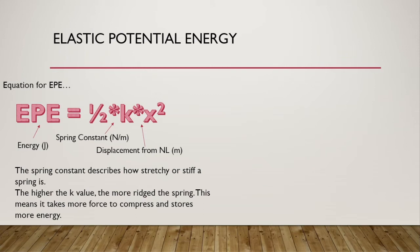The spring constant describes how stretchy or stiff a spring is. The higher the K value, the more rigid or stiff the spring is — meaning it's going to take more force to compress and it's going to store more energy. If K gets bigger, EPE gets bigger; if K gets smaller, EPE gets smaller. The bigger the K value, the more energy our spring is going to be able to hold.